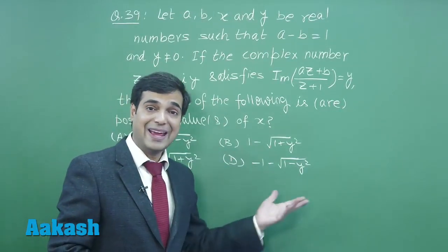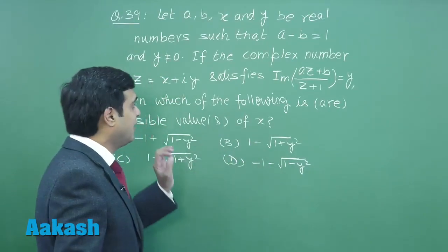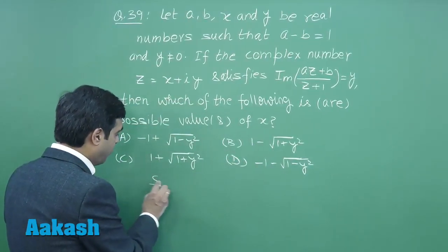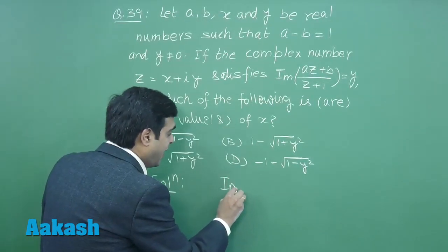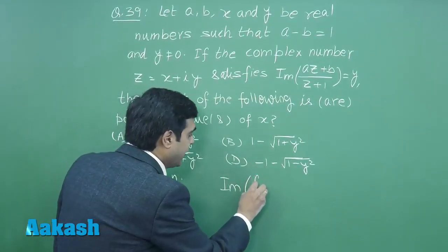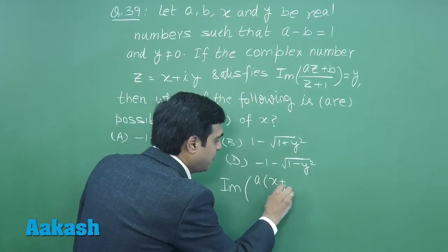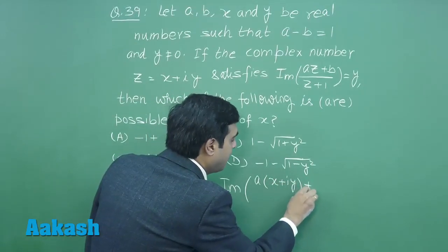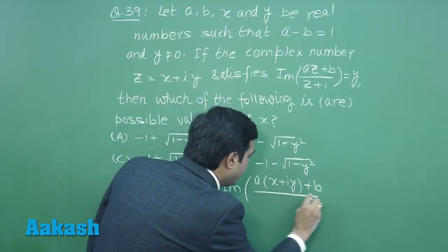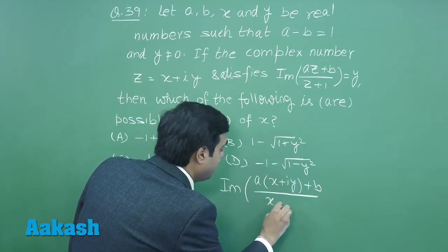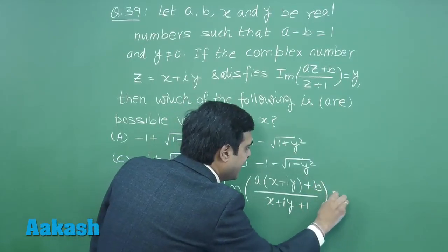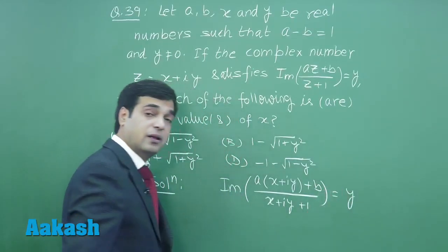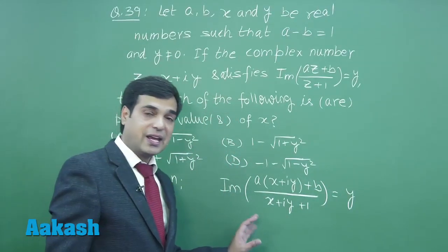This one we have to find out. Let's start. Given imaginary part of az, we can take z as x plus iota y, plus b divided by z plus 1, that is x plus iota y plus 1, equals y. To simplify, we multiply and divide by the conjugate.